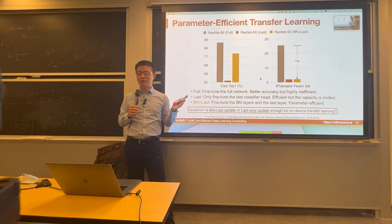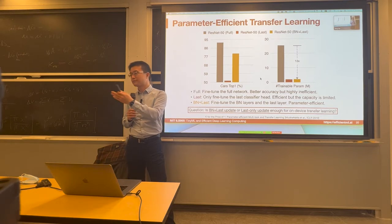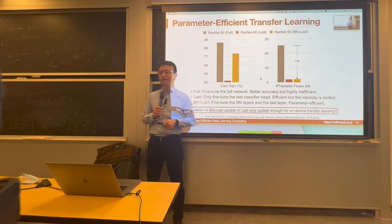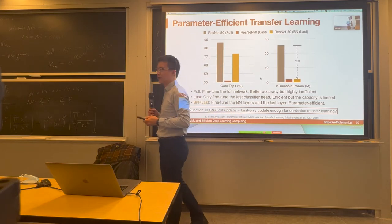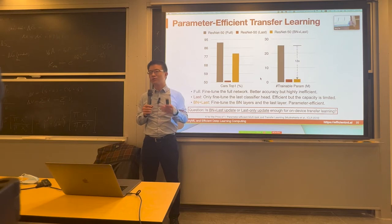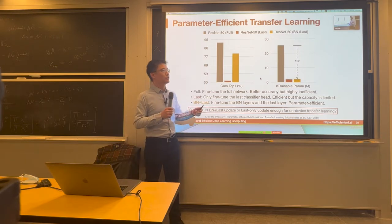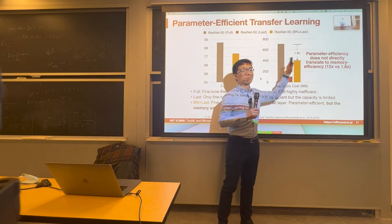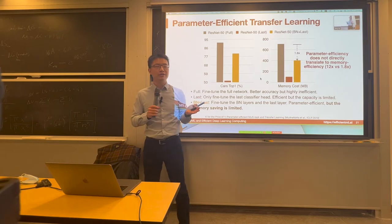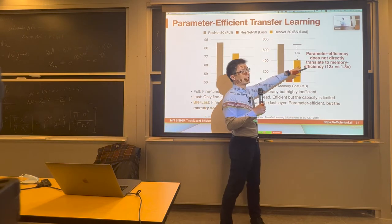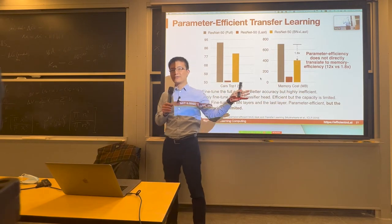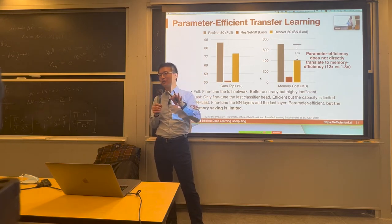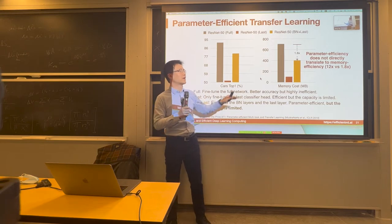What is the limitation of reducing the number of trainable parameters? It doesn't address the activation. As we mentioned, the number of parameters is not the bottleneck — the real bottleneck is activations, which is what limits training. Looking at actual memory, there's only 1.8x saving for memory. So parameter efficiency does not directly translate to memory efficiency. Memory efficiency requires two components: activations and parameters. Just reducing parameters is not enough — we also have to reduce the number of activations stored during training.